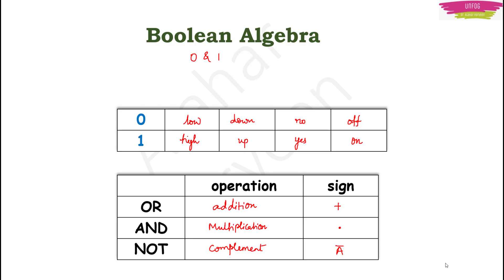If the operation between 0 and 1 is addition, you call it the OR operation. If the operation is multiplication, you call it the AND operation, denoted by a dot — it is the same as mathematics. And NOT operation means complement: the complement of 0 is 1, and the complement of 1 is 0.